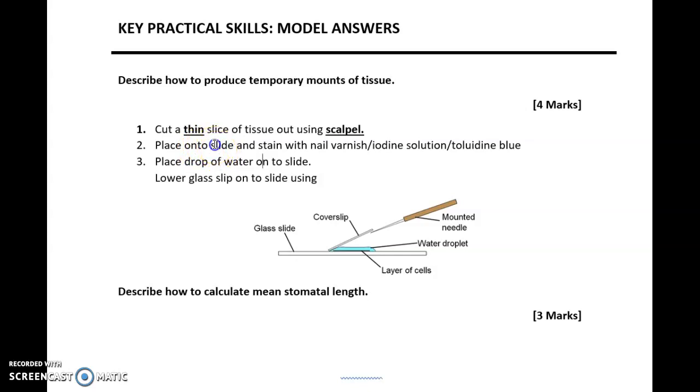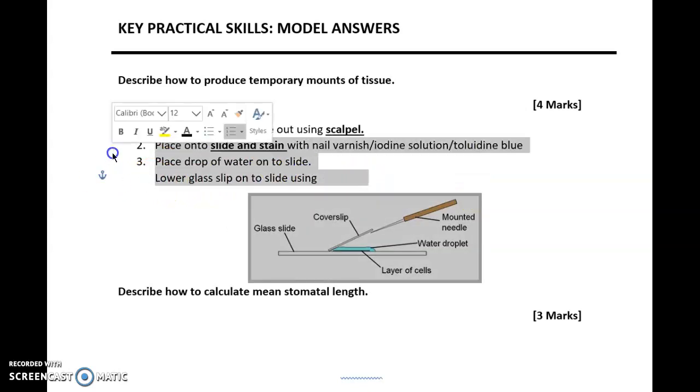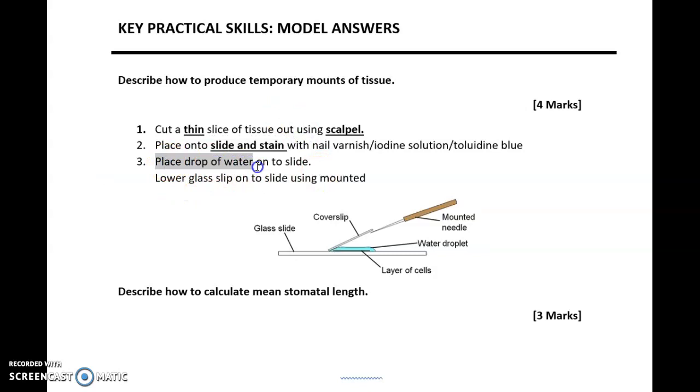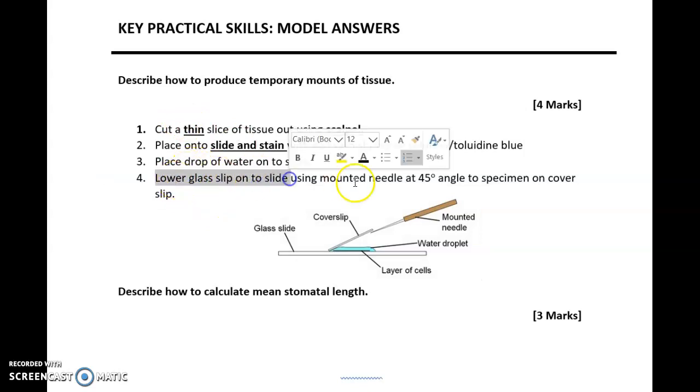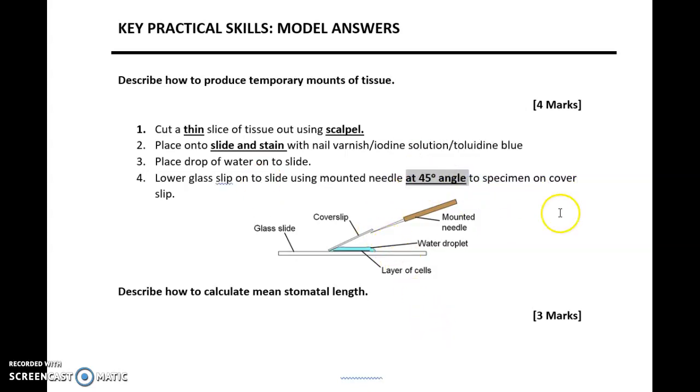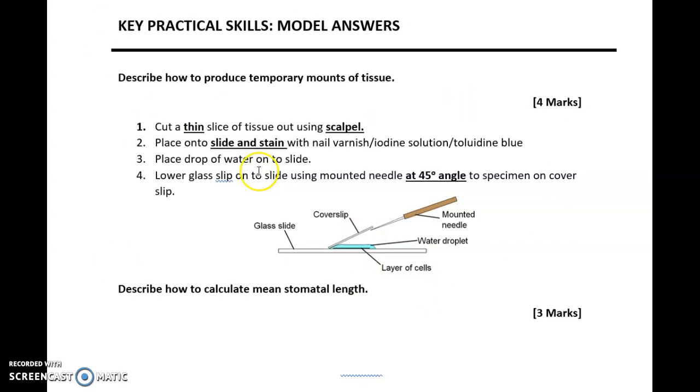It's important that you mention scalpel and that it's a thin slice. It needs to be thin so that you can observe using a microscope. You then place this thin slice onto a slide and you have to stain it. What you stain it with will depend on what you're investigating. Iodine is often used to investigate starch, but you can also use nail varnish. Finally, the third step is to place a drop of water onto the slide, and then the last step is to lower the glass slip onto the slide using a mounted needle at a 45 degree angle to cover the slip. Why is it important that we mention a 45 degree angle? By using it at this direction, it will prevent any air bubbles appearing on the glass slide and slip once you produce it. This answer will hopefully guarantee full marks.